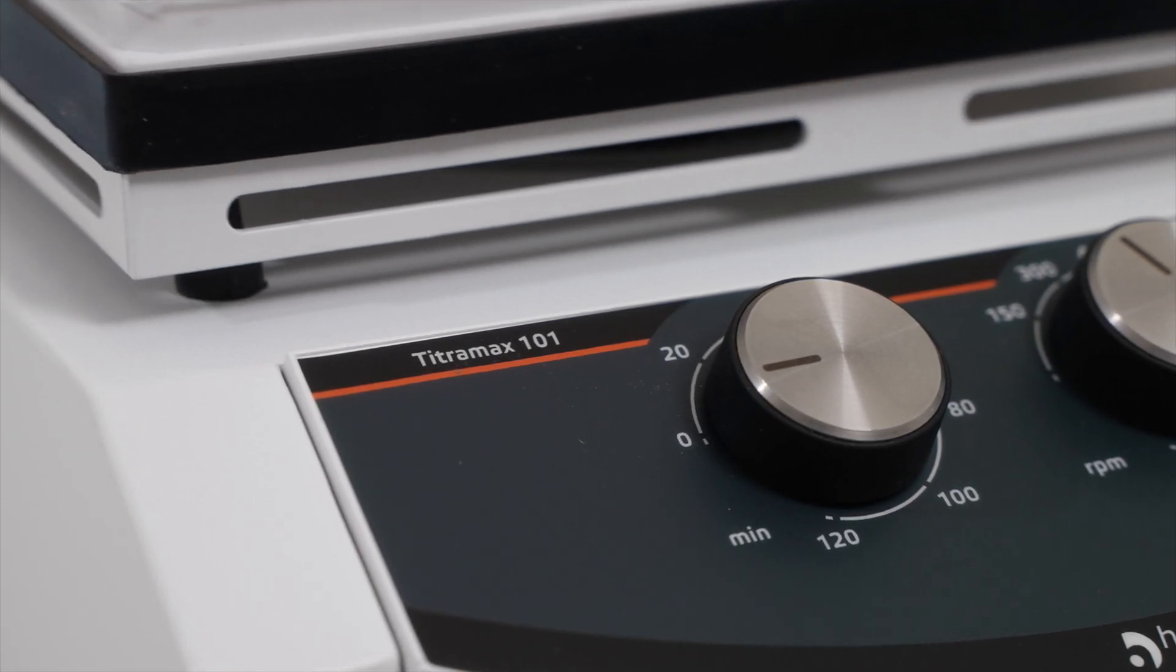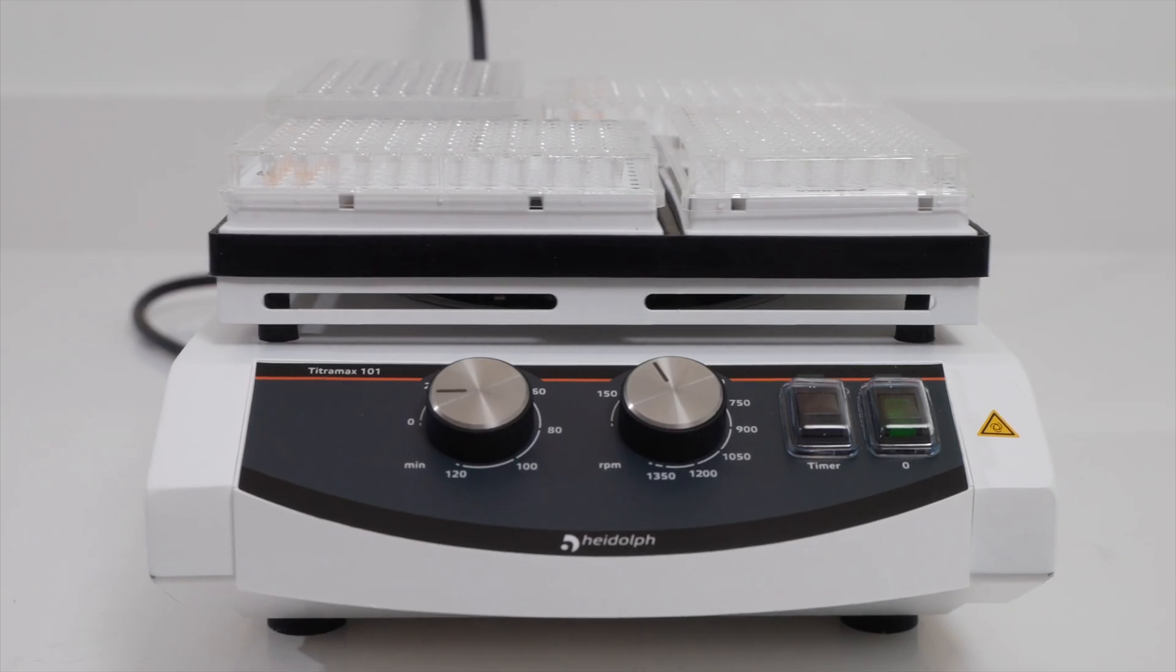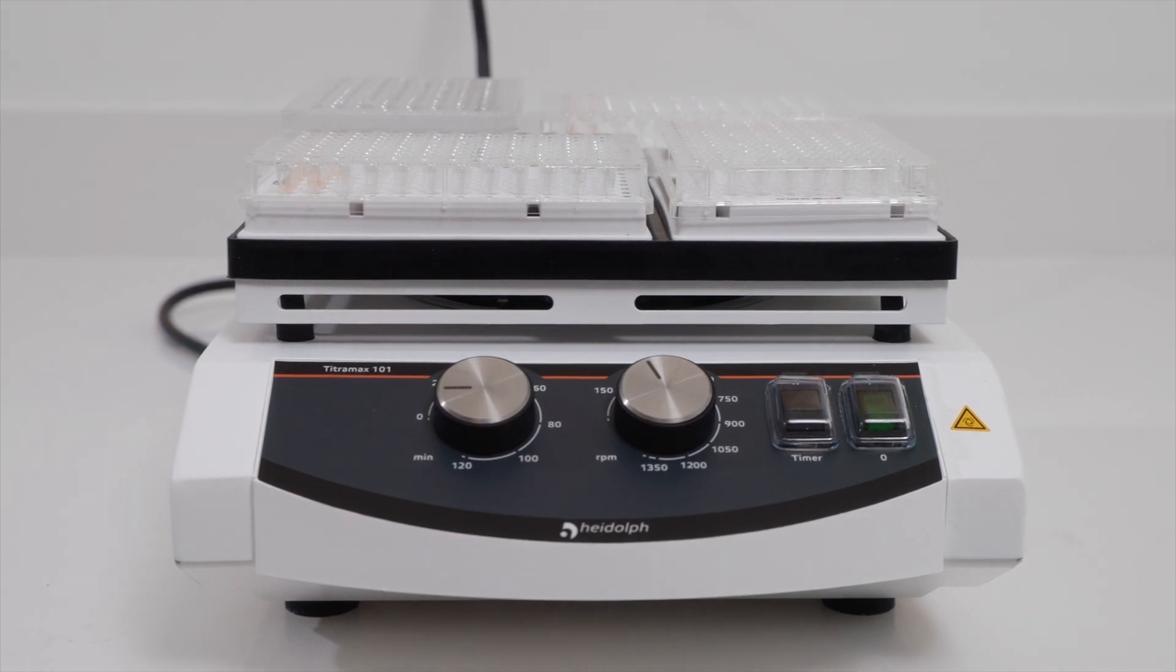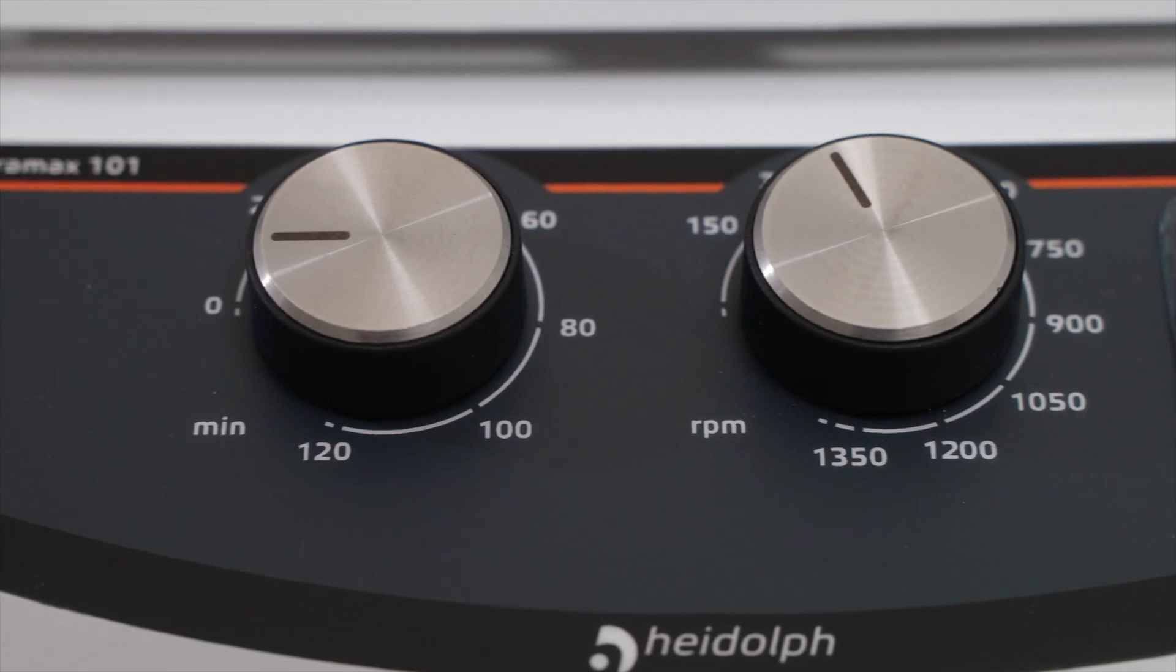Like the Titramax 100, the Titramax 101 can hold up to four micro-titer plates at once, has a speed range of 150-1350rpm, and has a built-in timer.